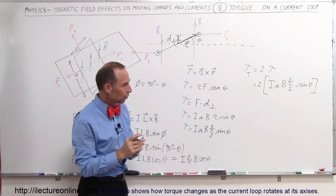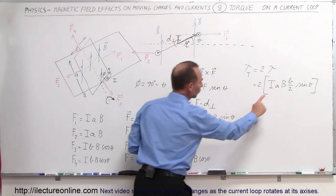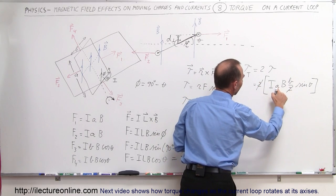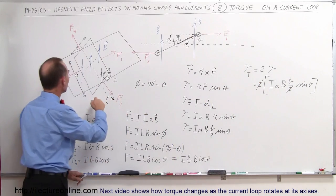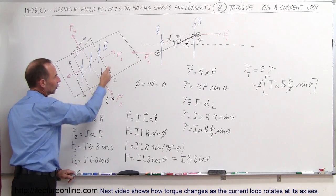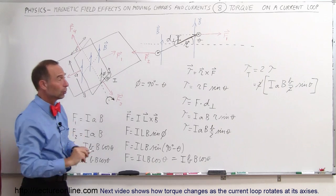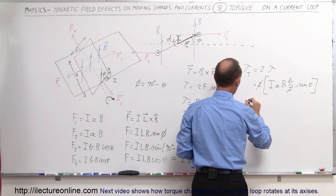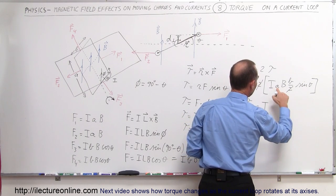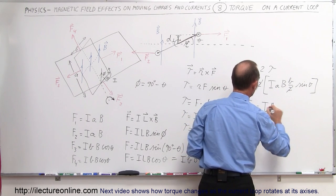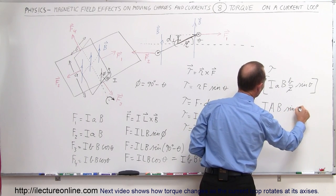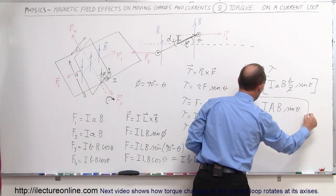Notice that the 2 will cancel out that 2, and small a times small b — coming back to the loop — notice that a was the length of the loop in one direction and b was the length of the loop in the other direction, so a times b is simply the area of the loop. Therefore, the total torque is equal to the current through the loop times the cross-sectional area of the loop times B, the magnetic field strength, times the sine of theta.